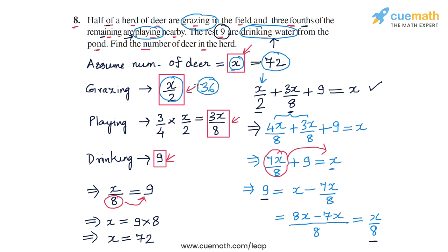Of the remaining 36 deer, if three-fourths are playing, that number should be 27. Three-fourths of 36 is 27, and the remaining is 9.